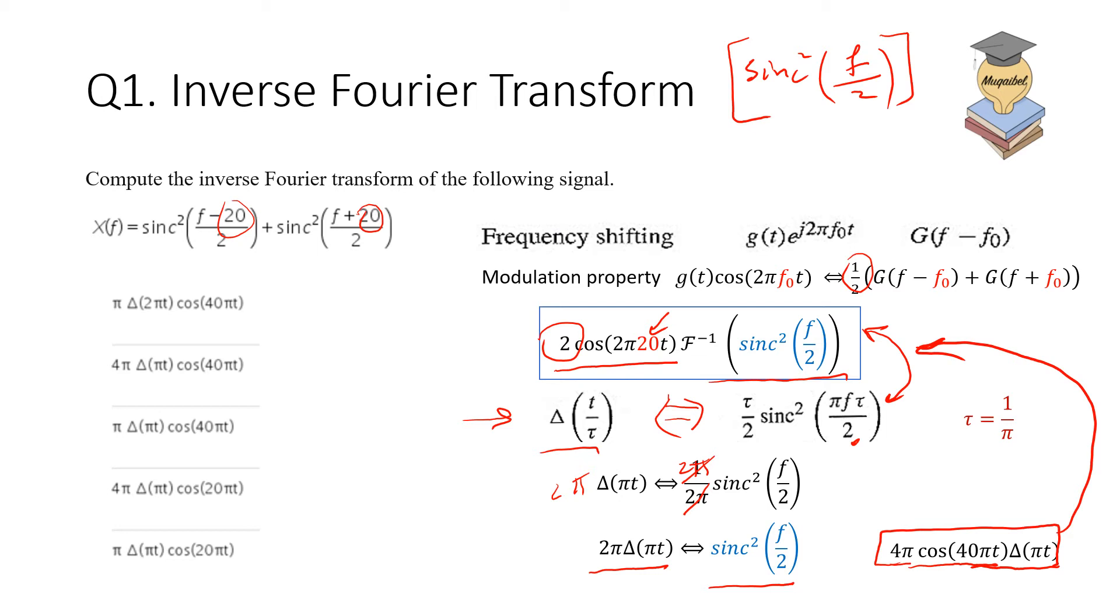Looking at the sketch here, you can see that some of them are clearly wrong because the amount of shift here is up to 10. What remains is the first three answers, and then you are looking at the scaling factor. The correct answer should be the second one. So if you get this, then you are doing great.